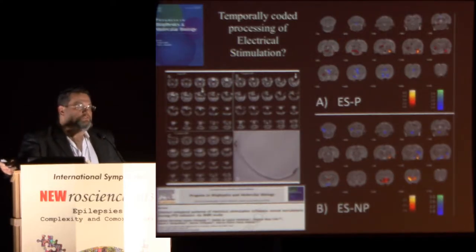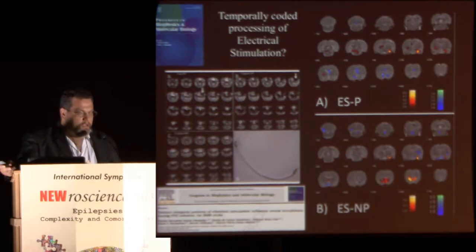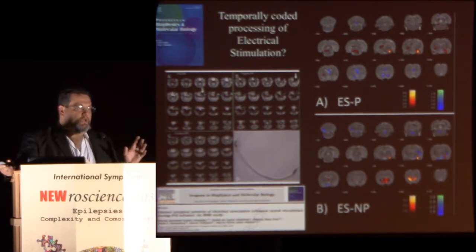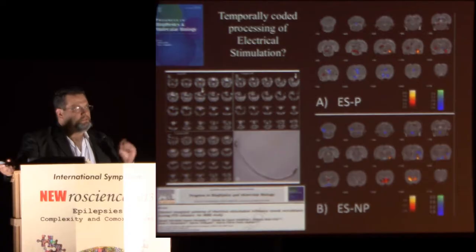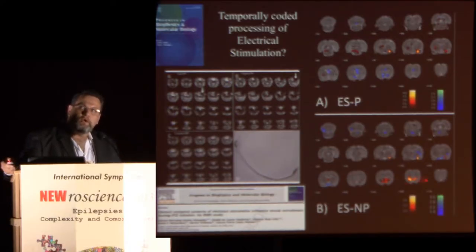We applied four stimuli per second to the amygdala complex. In the first case, this was periodic — a very constant, fixed discharge every 250 milliseconds. In the second case, this was a random temporal coding — completely random discharges, still four pulses per second, same intensity. As you can see, there is huge activity in the prefrontal cortex and nucleus accumbens only in the random temporal coding case.